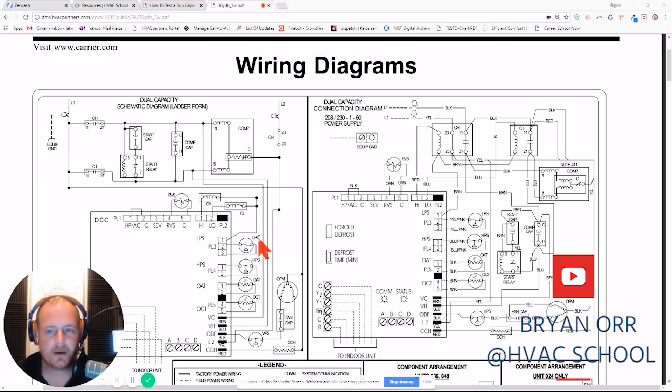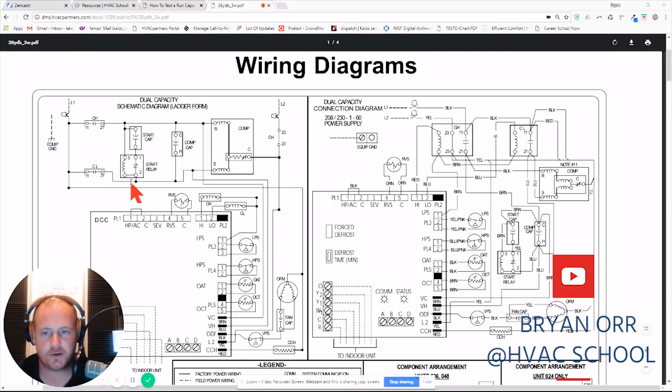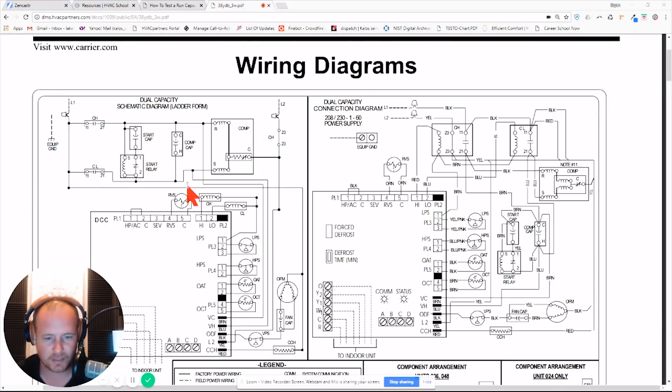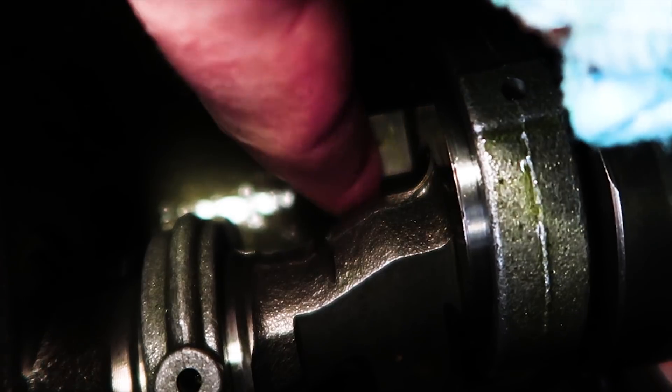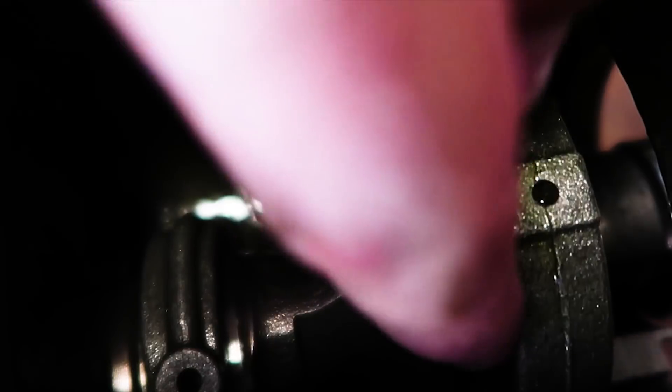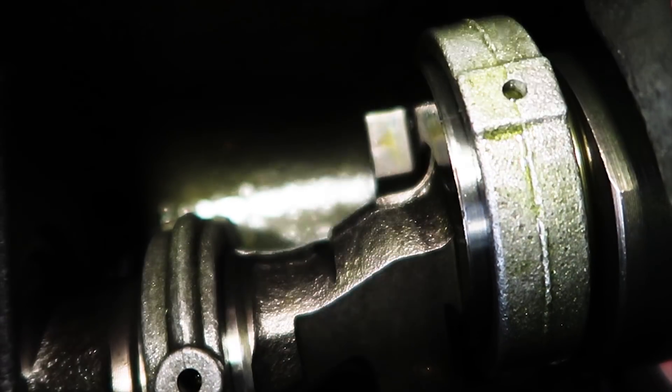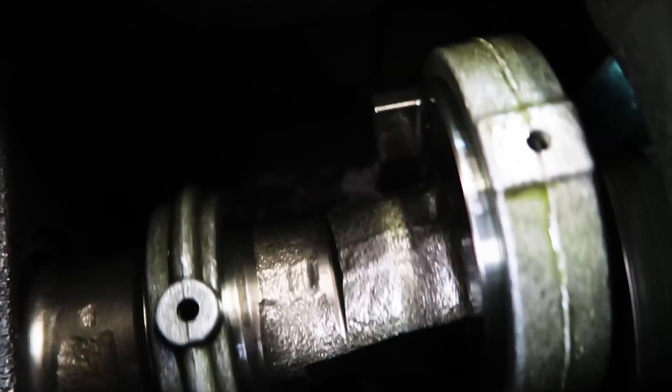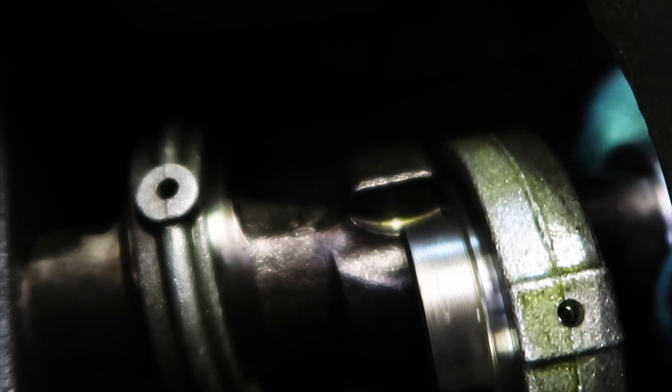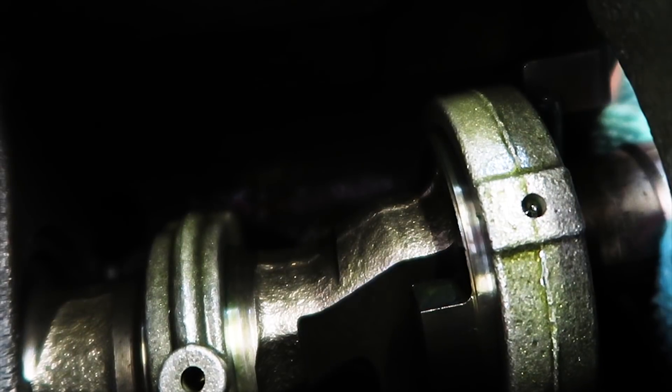All right, so some of you have probably seen my reciprocating compressor cutaway video. Just so you're aware, that was completely coincidental that it ended up being a Bristol T8 series, which is the compressor that unloads one of the cylinders, one of the pistons, when it runs in the opposite direction. So when it runs one way it pumps both pistons; when it runs the other way it only pumps one.